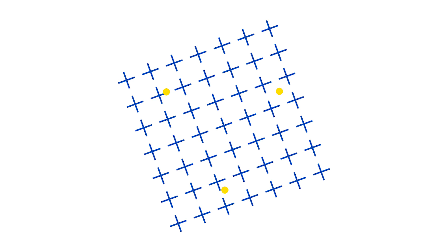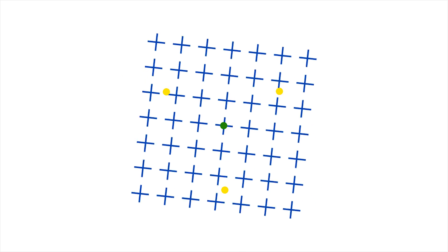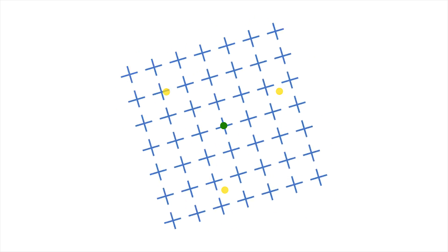You may notice that the yellow dots still seem to disappear, but not completely, and not nearly as quickly as when the background was spinning. The illusion seems to work best when the background moves.